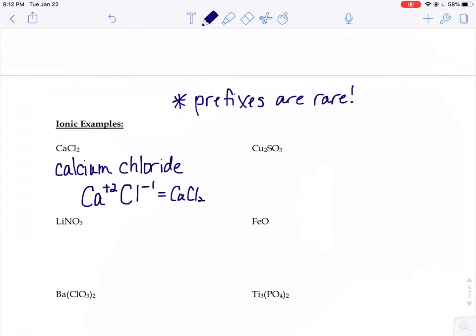You're only going to find those prefixes in covalent compounds only. And there's a lot more ionic examples out there in the world than there are covalent, just because the periodic table is made up of so many metals.